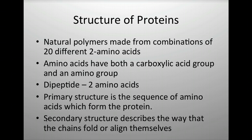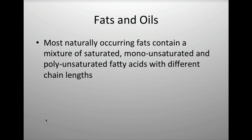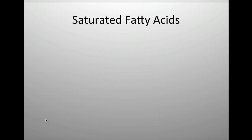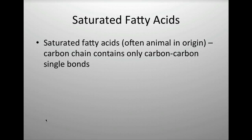The secondary structure describes the way the chains fold or twist to align themselves. Moving back to fats and oils — most naturally occurring fats contain a mixture of saturated fats, where all bonds are single bonds; monounsaturated fats, which have one double bond; and polyunsaturated fats, which have more than one double bond. Their chain lengths can vary.